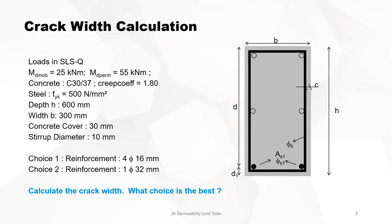We want to calculate the crack width when the tension reinforcement is 4 diameter 16, and in a second case we will calculate the crack width with reinforcement of 1 diameter 32.